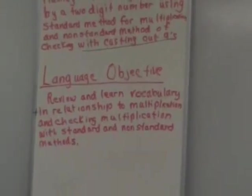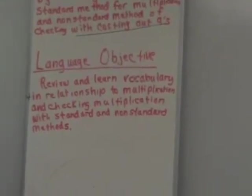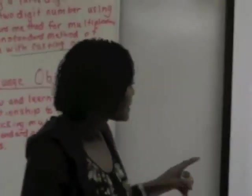Our language objective is the vocabulary of multiplication and casting out nines, to make sure we understand what we're doing. The top number is the multiplicand, the bottom number is the multiplier. The first answer you get is a partial product, the second is a partial product, and the final is your product. I want to make sure we understand that.